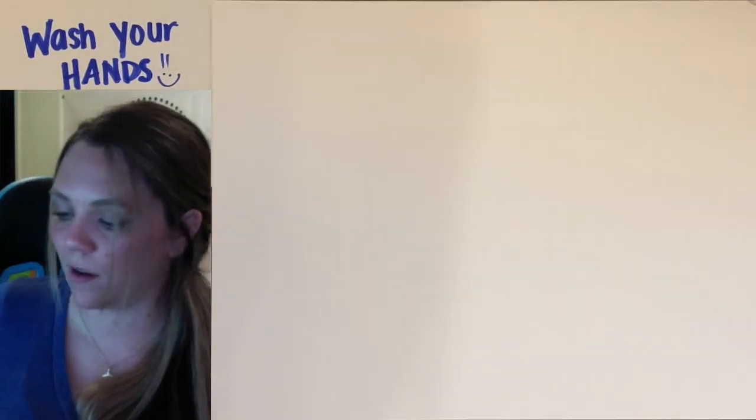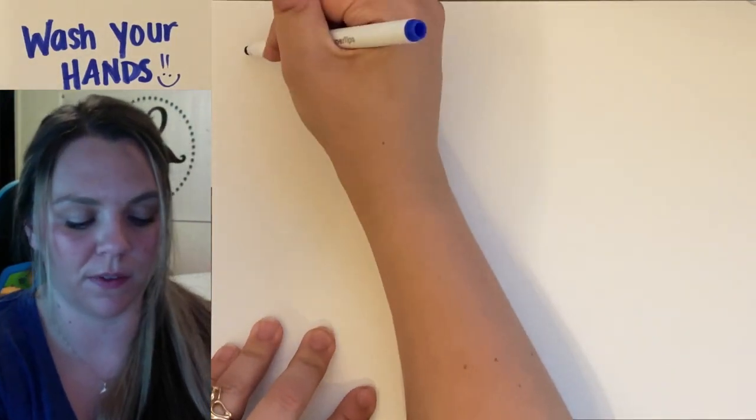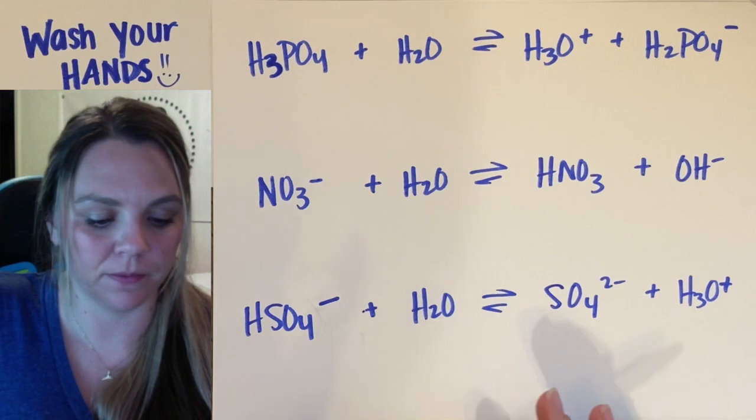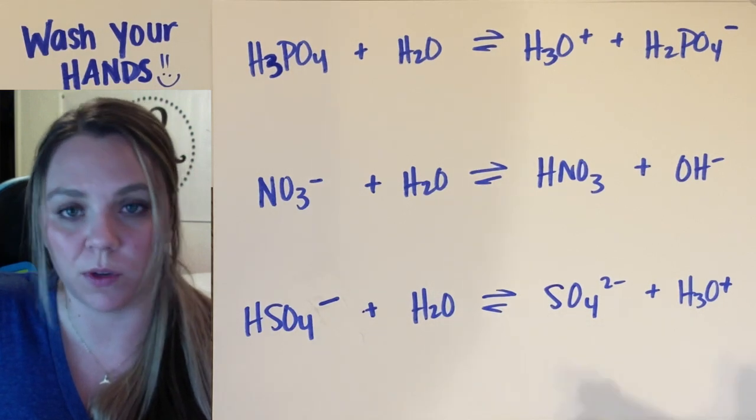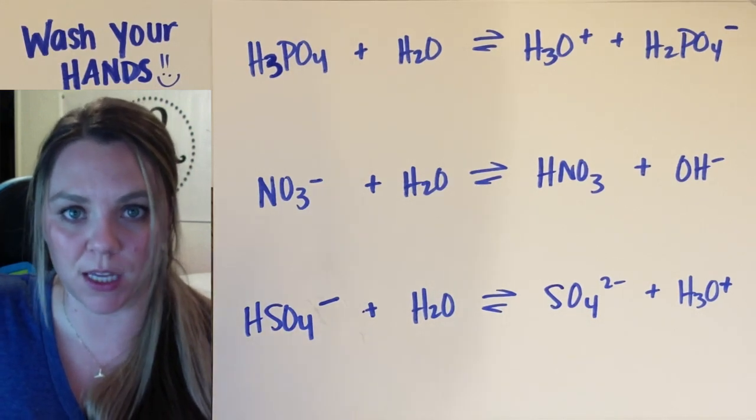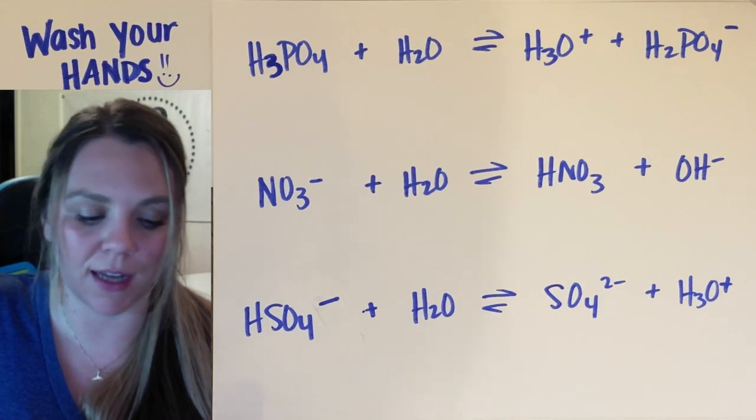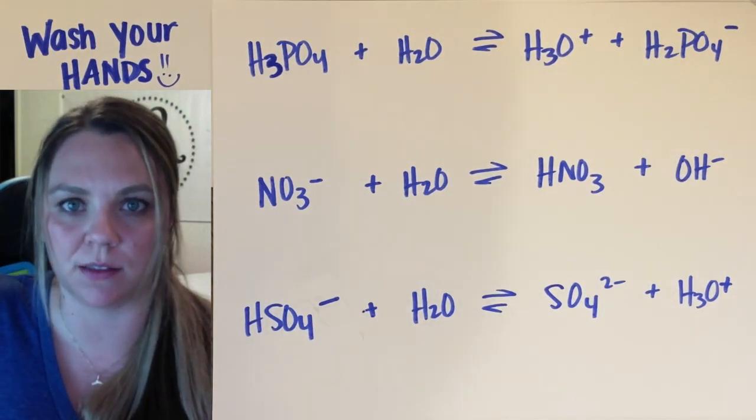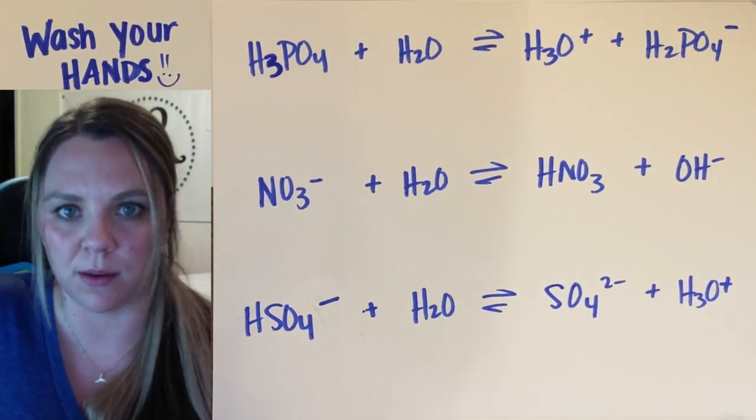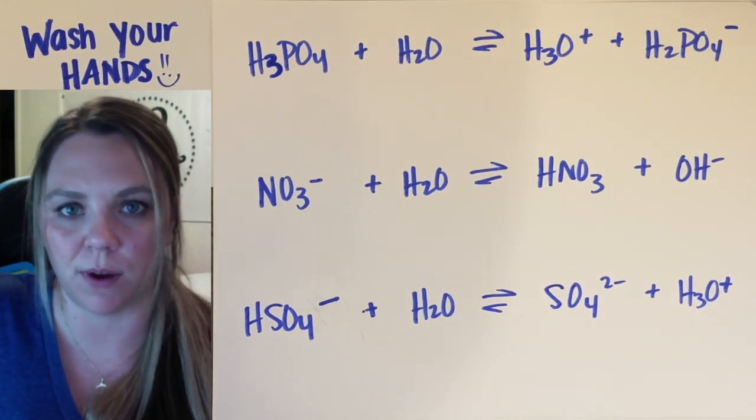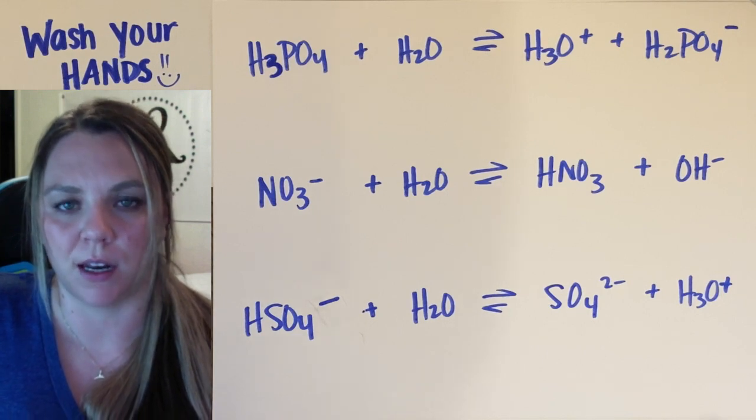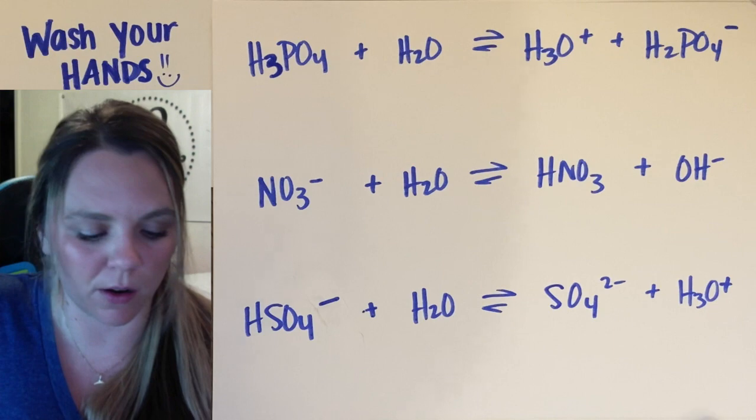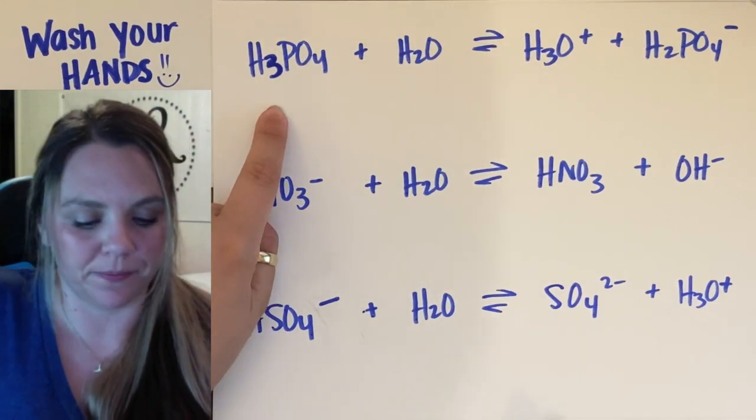There you have it. Let's do a few examples. So three examples to go over. If you want to pause, you can check these. Try and do them. Identify the acid, base, and conjugate acid, conjugate base. Try them on your own right now. Pause me. See if you can get it right. And now unpause. You got it. Here we go.